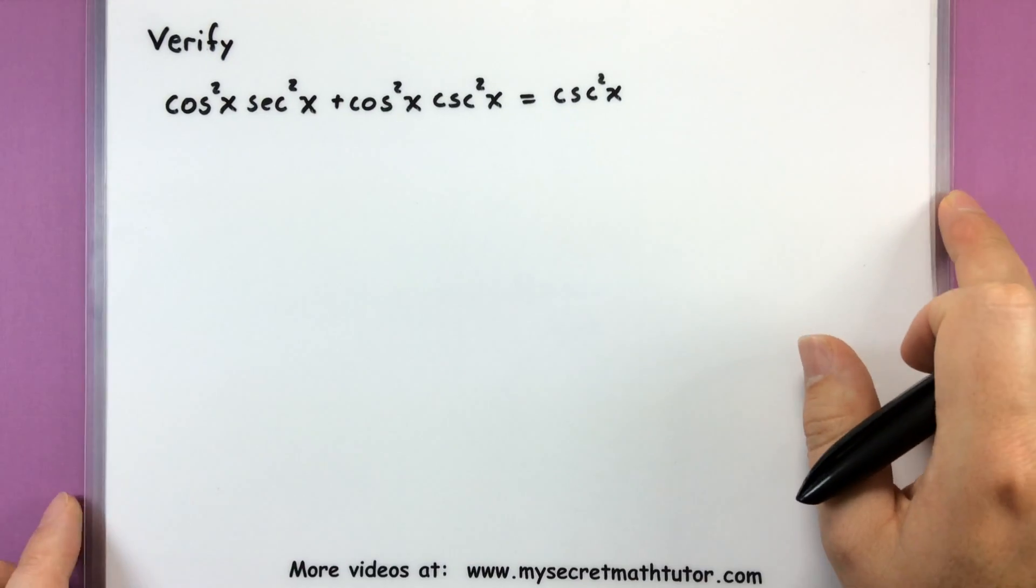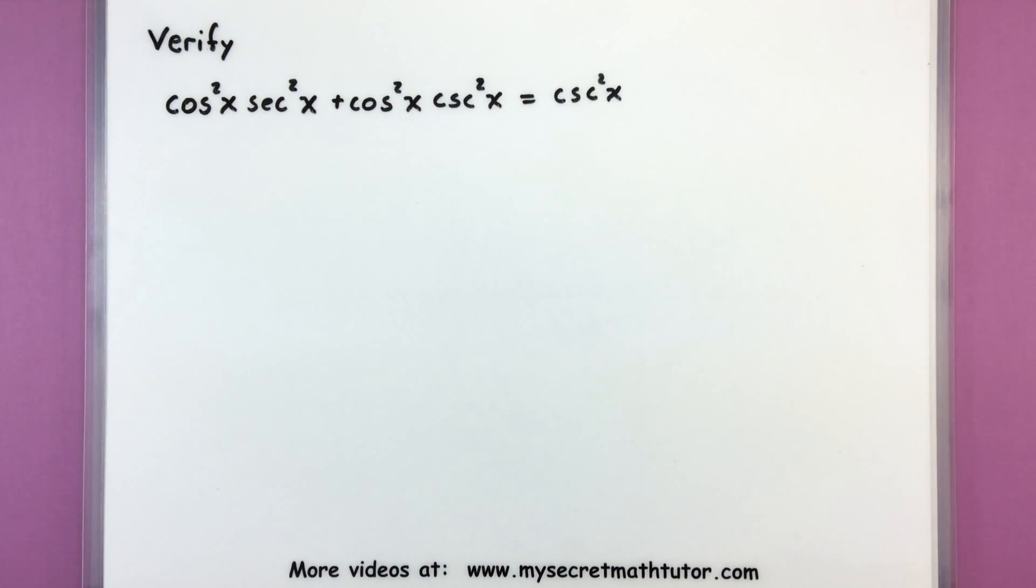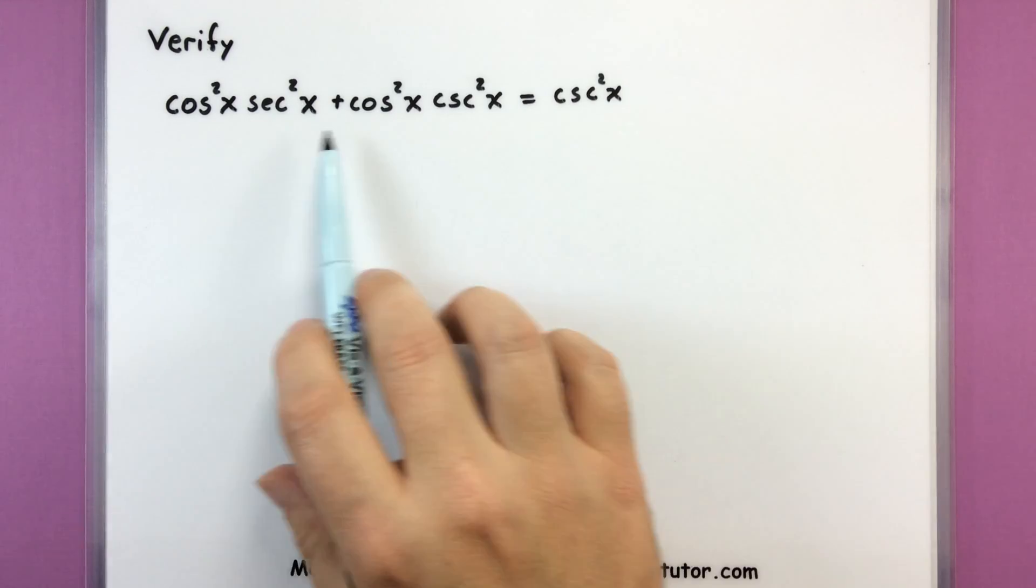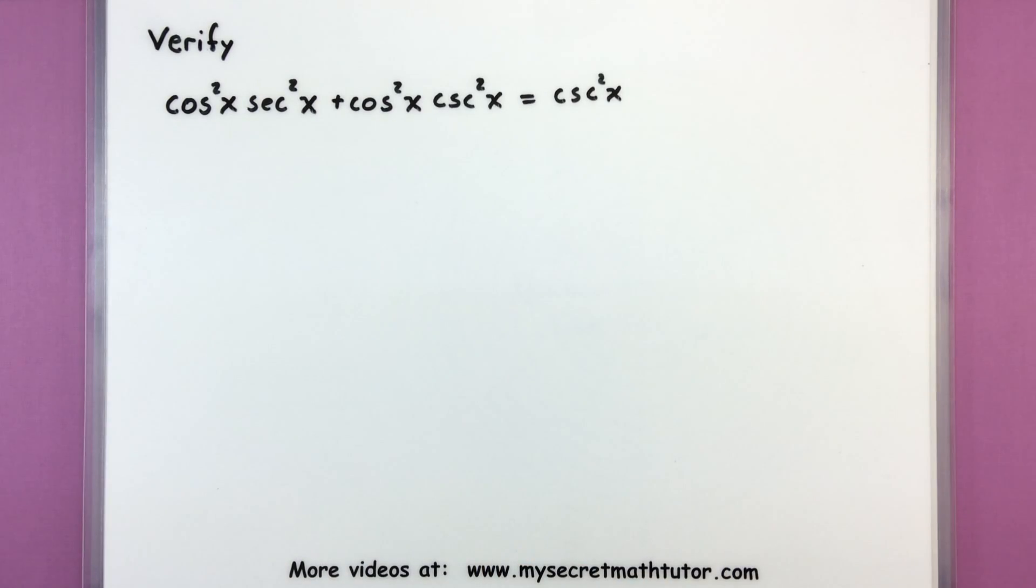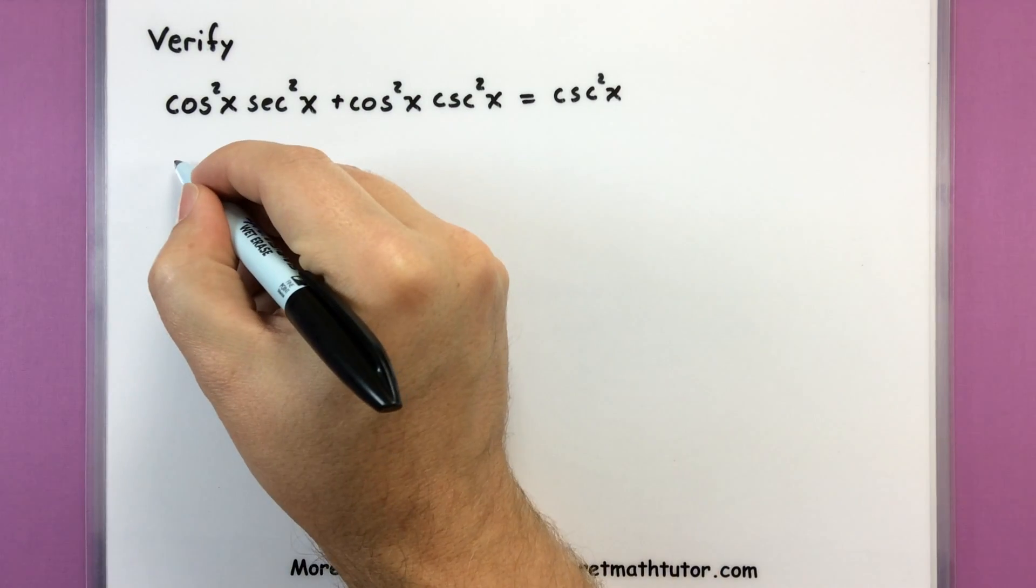One last one. Let's pick one that looks fairly ugly. Let's try this guy out. This is cosine squared x multiplied by secant squared x plus cosine squared x multiplied by cosecant squared x. We're going to verify that that's really equal to cosecant squared x. So now this one, the left side is definitely the more complicated one. Lots of stuff going on there. Let's go ahead and write this one in terms of sine and cosine.